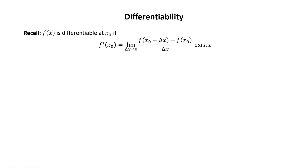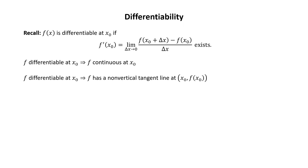Differentiability. Recall from single variable calculus that a function f of x is differentiable at x₀ if f prime of x₀ equals the limit as delta x goes to 0 of f of x₀ plus delta x minus f of x₀ over delta x, and that limit exists. Also recall that if f is differentiable at x₀, then f is continuous at x₀, and f has a non-vertical tangent line at the point (x₀, f(x₀)).